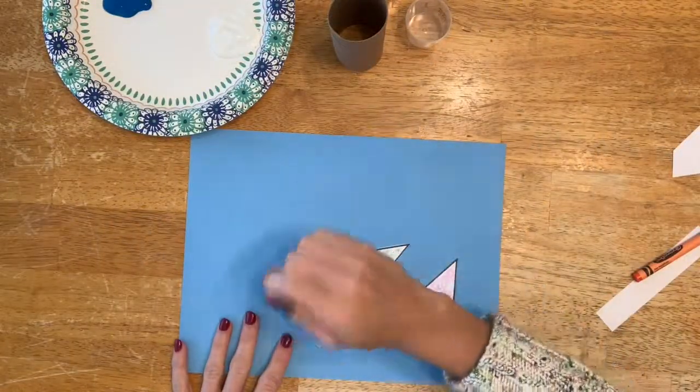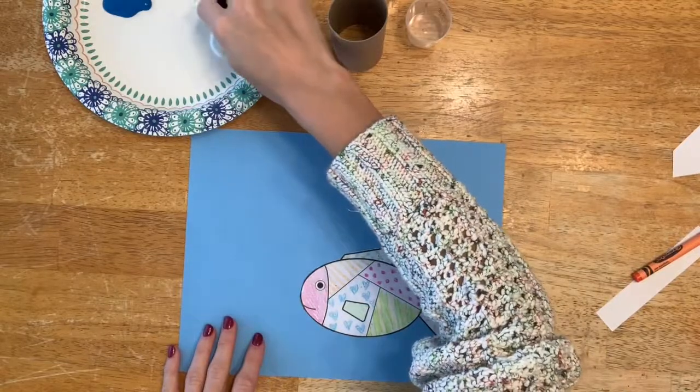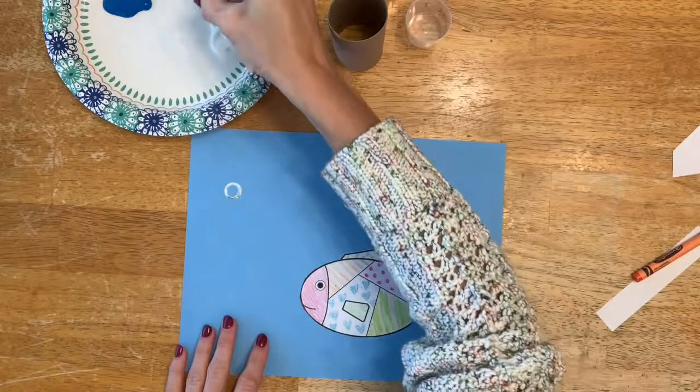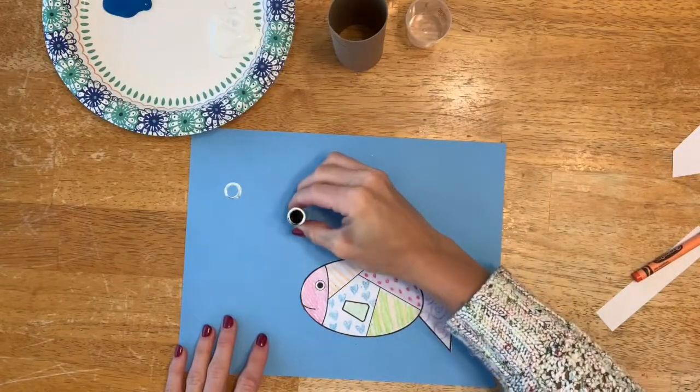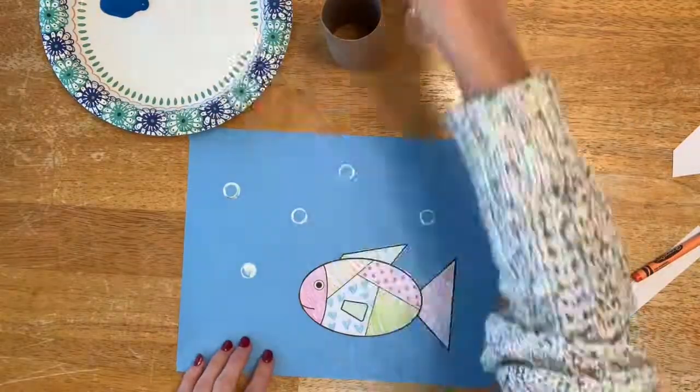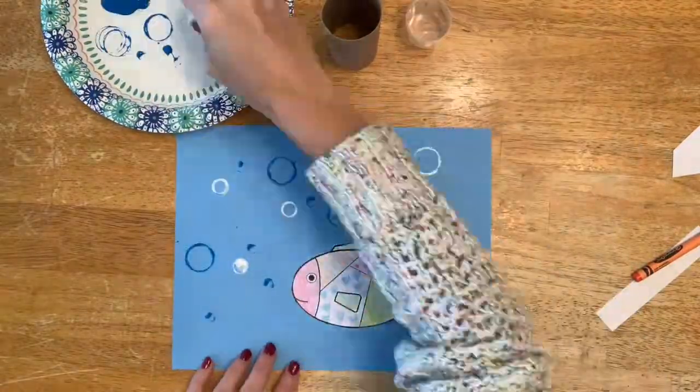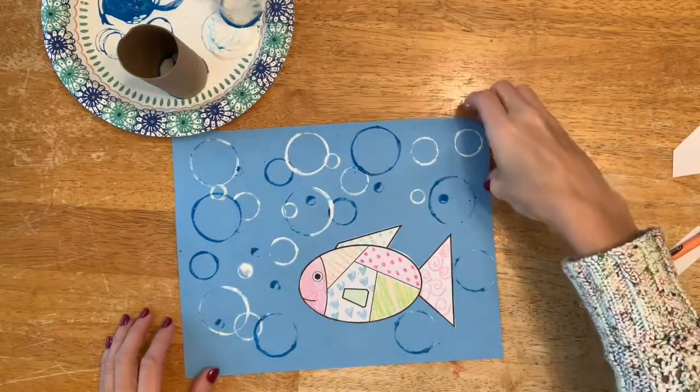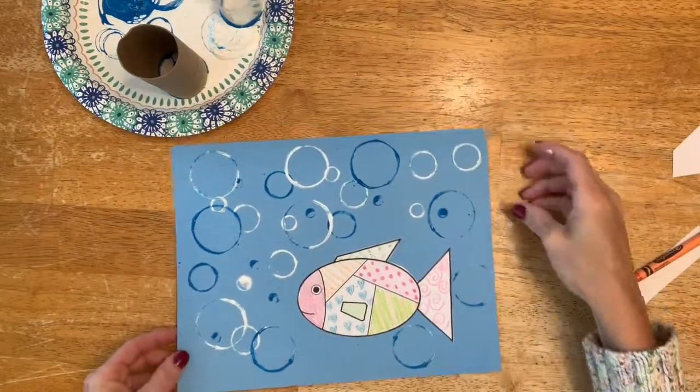They're going to stamp with these and they're making another pattern, they're making a pattern of rings. So they're going to dip in and they're going to make some different size rings. They're going to kind of look like bubbles.